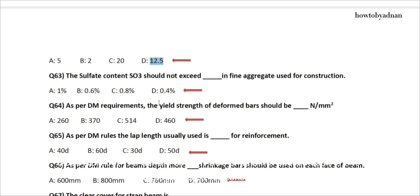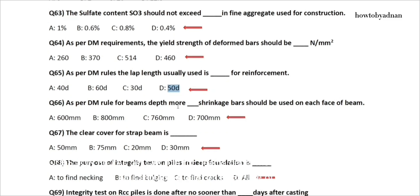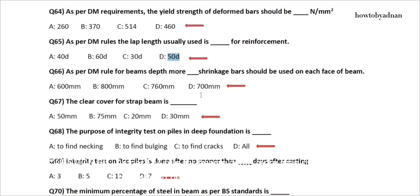Question 63: The sulfate content SO3 should not exceed how much in fine aggregate used for construction? The answer is option D: 0.4%. Question 64: As per DM requirements, the yield strength of deformed bars should be how many Newton per mm²? The answer is option D: 460. Question 65: As per DM rule, the lap length usually used for reinforcement is? The answer is option D: 50D. Question 66: As per DM rule, for beams with depth more than how much should shrinkage bars be used on each face of beam? The answer is option D: 700 millimeters.